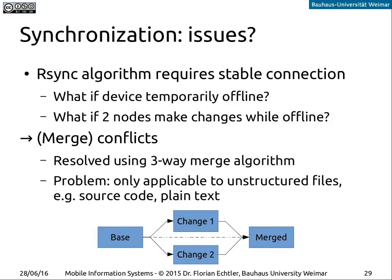Finally, let's look at what issues appear even with this kind of synchronization. Even rsync, which uses a lot less data, still needs a stable connection — if one device goes offline in the middle, you basically have to restart the synchronization. If two nodes make changes at the same time while in different network partitions, you get so-called merge conflicts, also known from version control systems. These can sometimes be resolved using a so-called three-way merge algorithm: if the changes don't conflict, you can use data from the original version, the first change, and the second change to create a merged result.